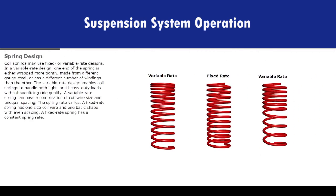Coil springs may use fixed or variable rate designs. In a variable rate design, one end of the spring is either wrapped more tightly, made from different gauge steel, or has a different number of windings than the other. The variable rate design enables coil springs to handle both light and heavy duty loads without sacrificing ride quality. A variable rate spring can have a combination of coil wire size and unequal spacing, and the spring rate varies. A fixed rate spring has one size coil wire and one basic shape with even spacing and a constant spring rate.